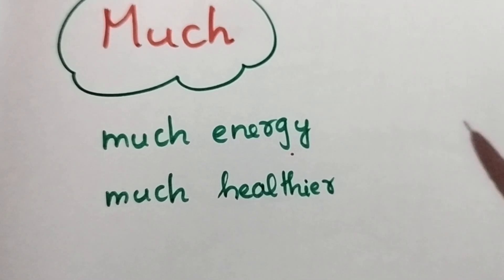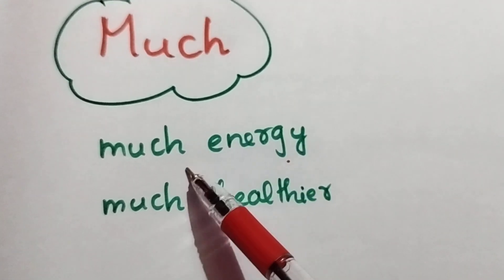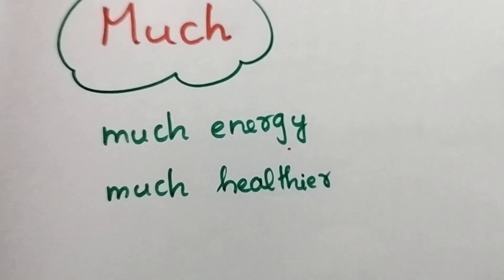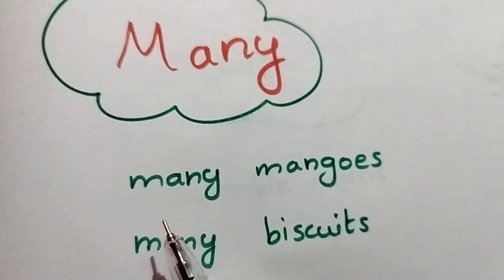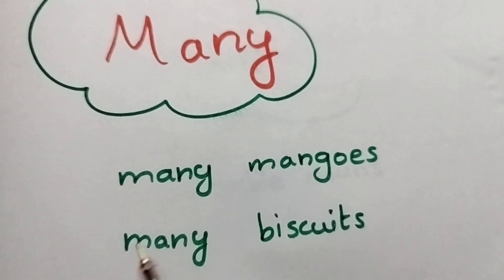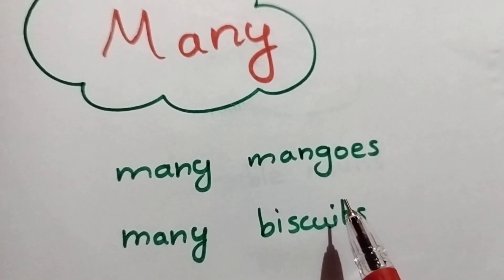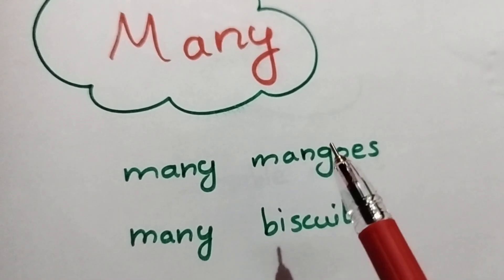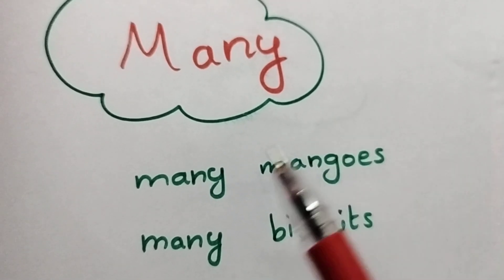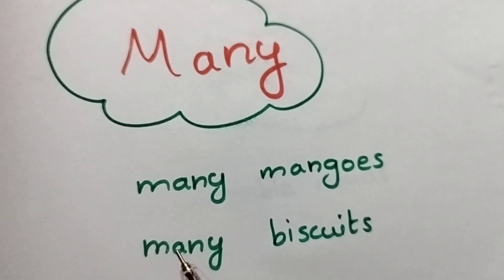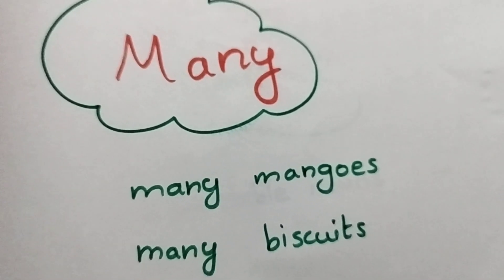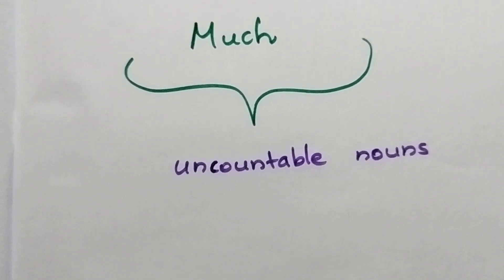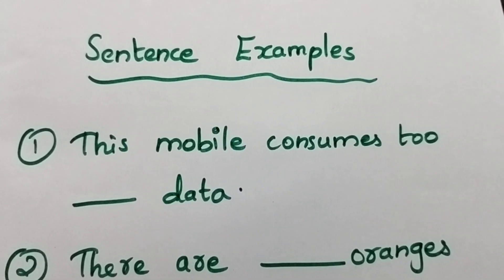For example, 'much energy' — you can't count energy, so we use 'much' for an uncountable noun. 'Many mangoes,' 'many biscuits' — biscuits and mangoes are countable nouns, so we use 'many.' That is the basic difference.